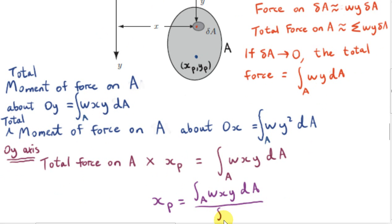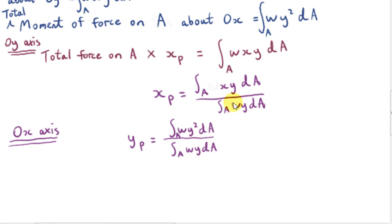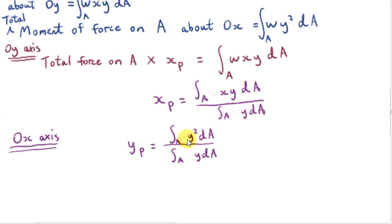We divide the right-hand side by the total force on A, which is the integral of Wy dA. In a similar way, we can calculate the y-value of the center of pressure by dividing the total moment of force on A about the x-axis — that's the integral of Wy² dA — by the total force, which is the integral of Wy dA. The denominators in both fractions are the same, and notice that the W's cancel because W is just the proportionality constant relating pressure and depth.